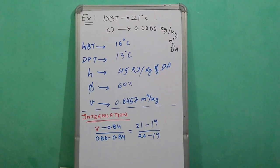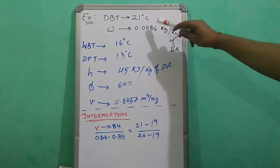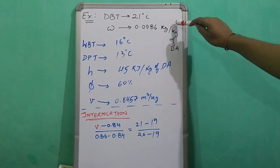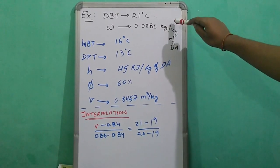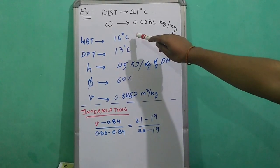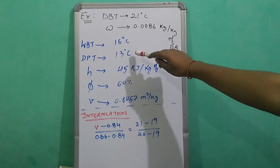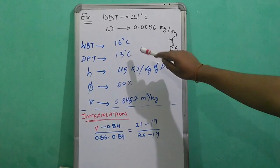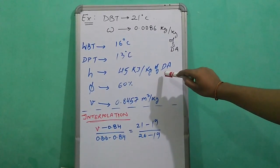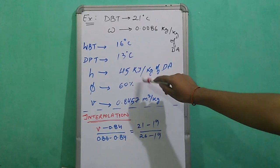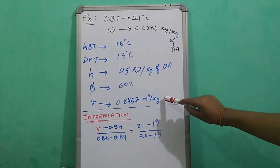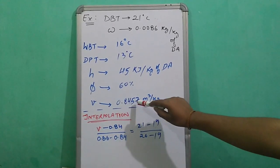Let's take an example. At a dry bulb temperature of 21 degrees Celsius and a specific humidity of 0.0086, we get a wet bulb temperature of 16 degrees Celsius, a dew point temperature of 13 degrees Celsius, an enthalpy of 45 kilojoules per kg of dry air, a relative humidity of 60%, and a specific volume of 0.8457.